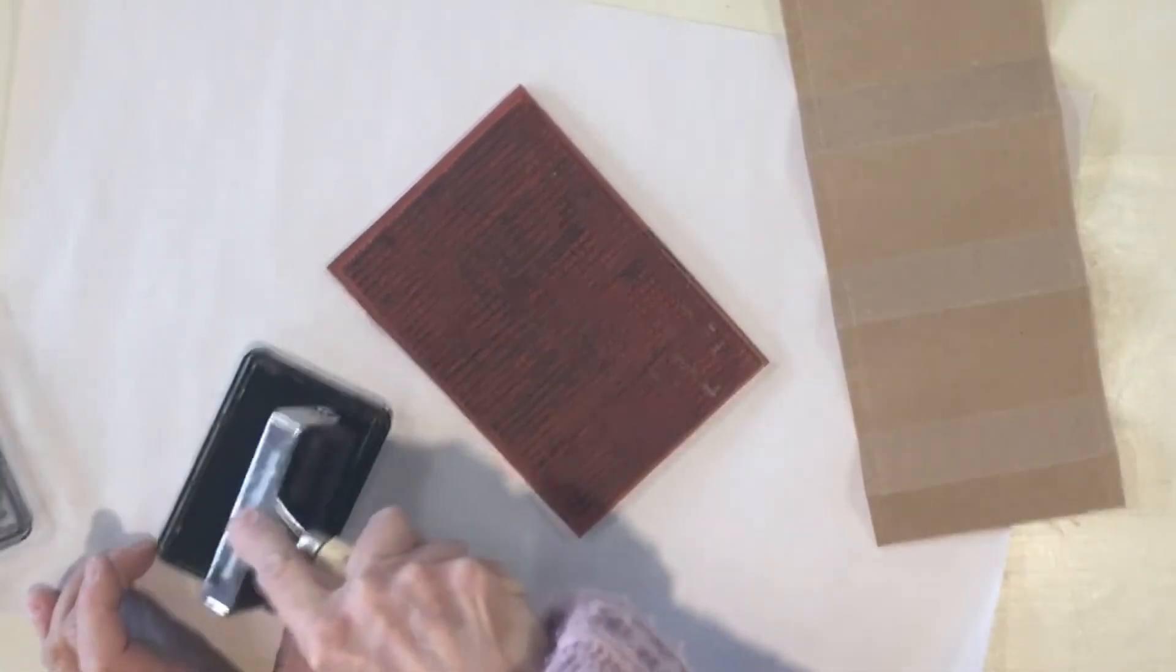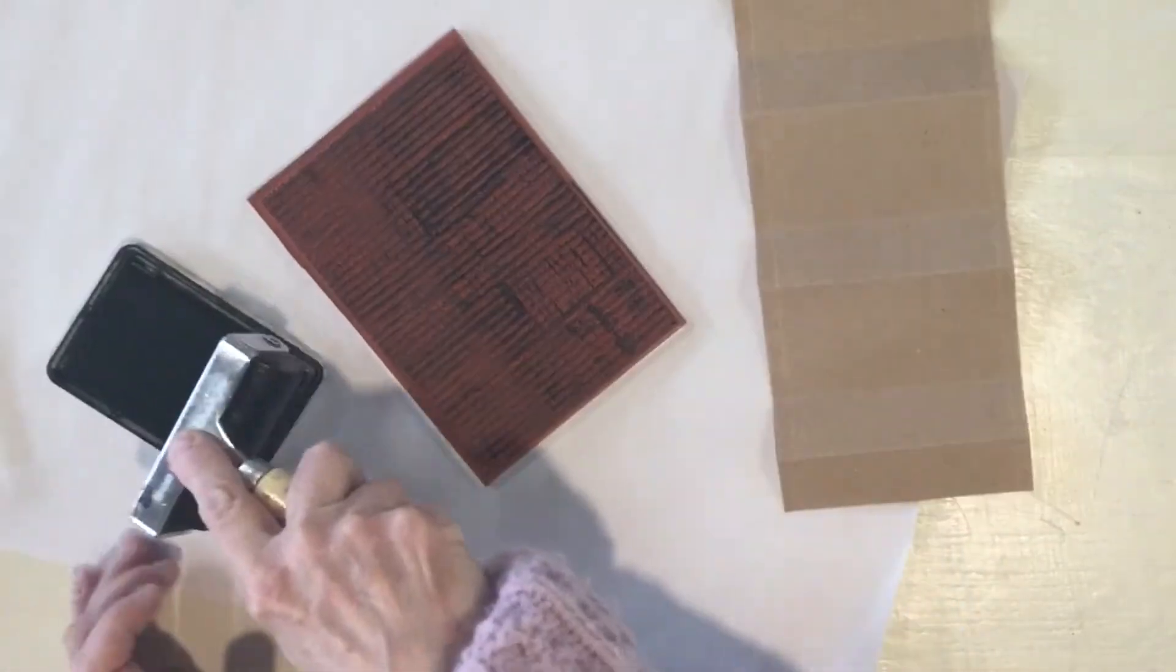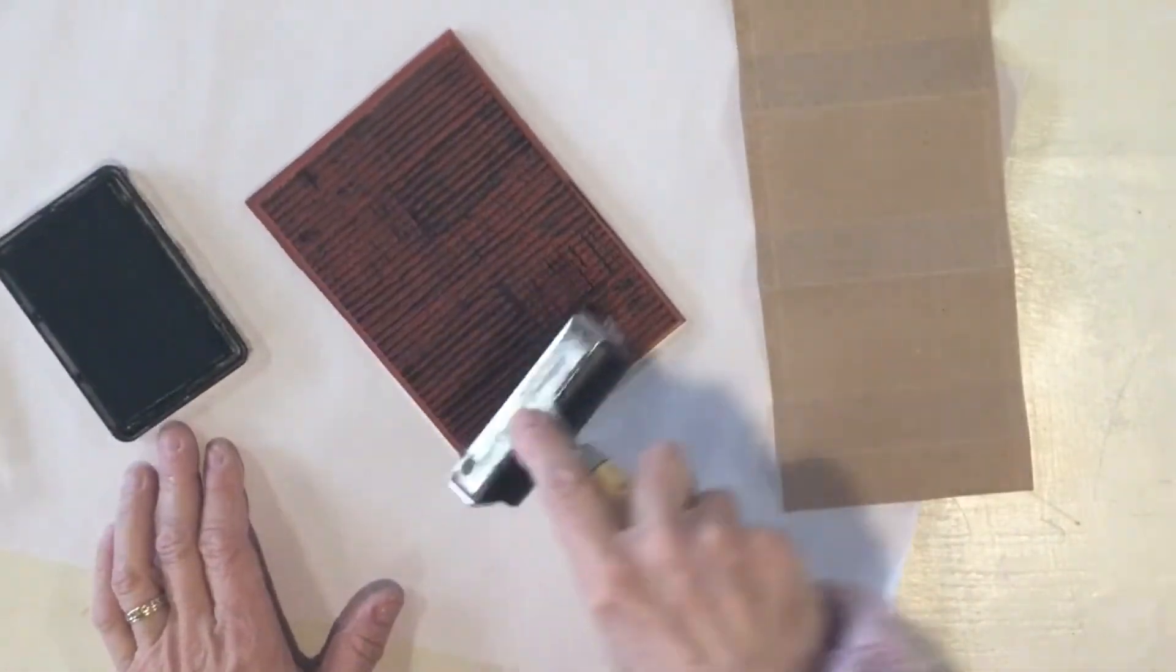I'm using this corrugated metal stamp that I have and I'm using my black IOD ink and I'm going to use my brayer.